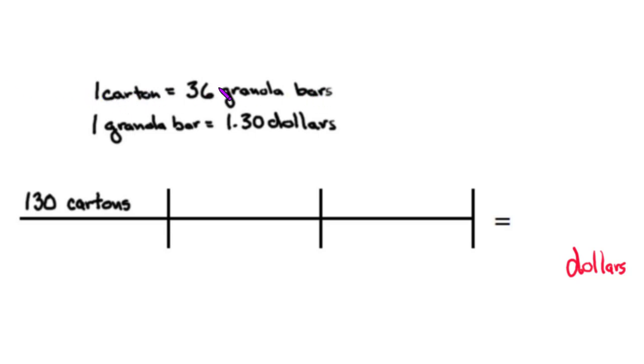I see that one carton equals 36 granola bars, so I can write that as one carton over 36 granola bars, or I could flip it and take the reciprocal: 36 granola bars over one carton.